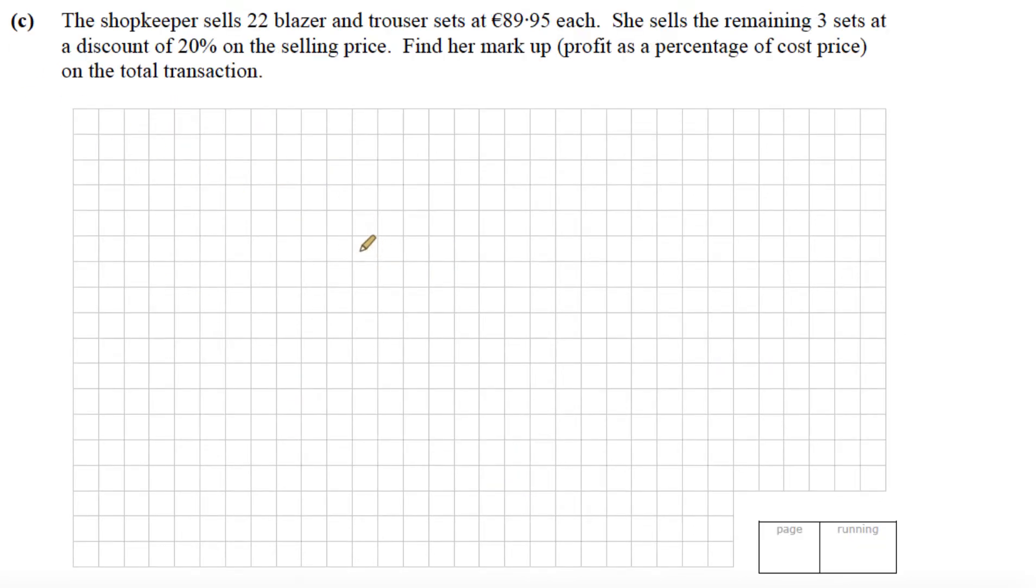Part C: The shopkeeper sells 22 blazer and trouser sets at 89.95 each. She sells the remaining three sets at a discount of 20% on the selling price. Find her markup, that's her profit, as a percentage of cost price on the total transaction. So 22 sets at 89.95 each, let's find that first.